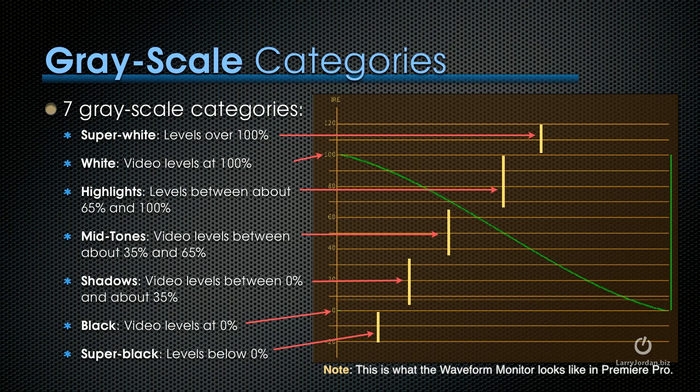If we start at the top, the region from 100% to 120%, this region right in here, is called super white. These are illegal levels everywhere except for the web. So we want to make sure that we don't have any white levels that extend over 100% into super white.